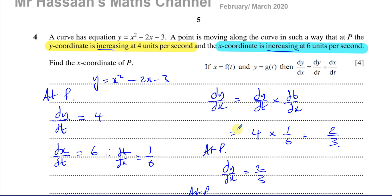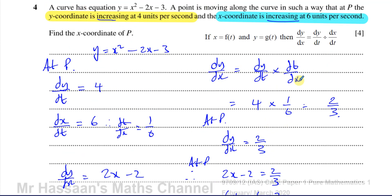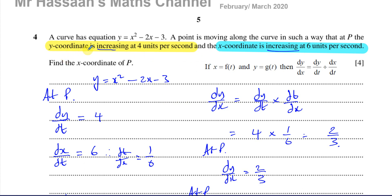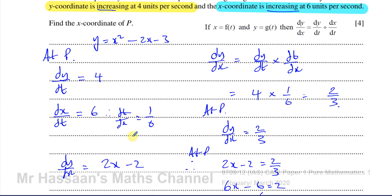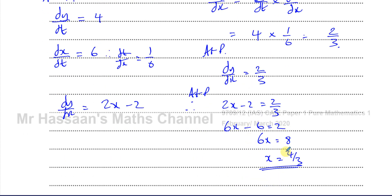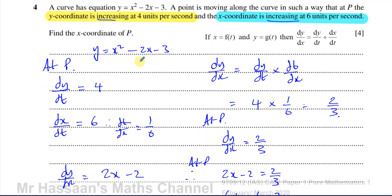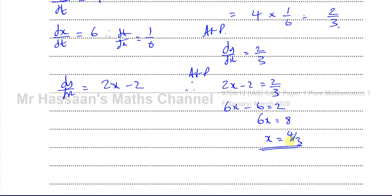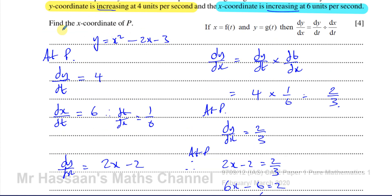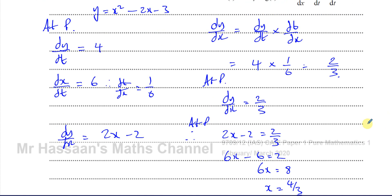So x equals 4 thirds is the answer to this question. To summarise: we wrote dy/dt as 4 and dx/dt as 6, used those to find dy/dx as 2 thirds at point P, and since dy/dx from differentiating the curve is 2x minus 2, setting that equal to 2 thirds gives x equals 4 thirds. If they had asked for the y coordinate too, we'd substitute x equals 4 thirds back into the original equation, but here only the x coordinate is needed, so no extra work is required.